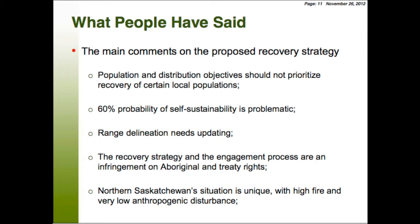We also heard a lot that range delineation needs updating. There were concerns that the recovery strategy and engagement process were an infringement on Aboriginal and treaty rights. There was a lot of concern in Saskatchewan that their situation is unique — they have a very high natural fire regime, one of the highest seen within boreal caribou range in Canada, and at the same time very low anthropogenic disturbance at about 2–5%. Because of that, there were concerns that the model developed didn't necessarily apply there.